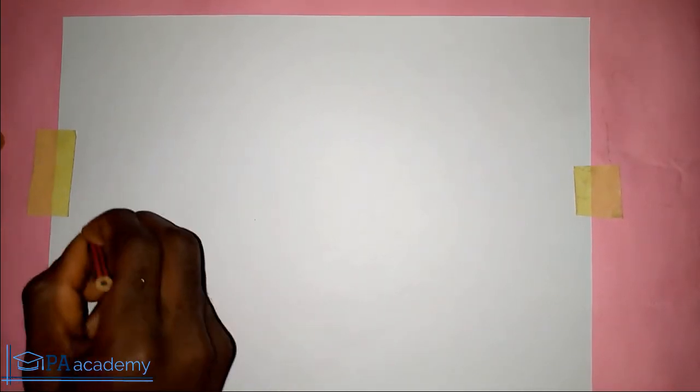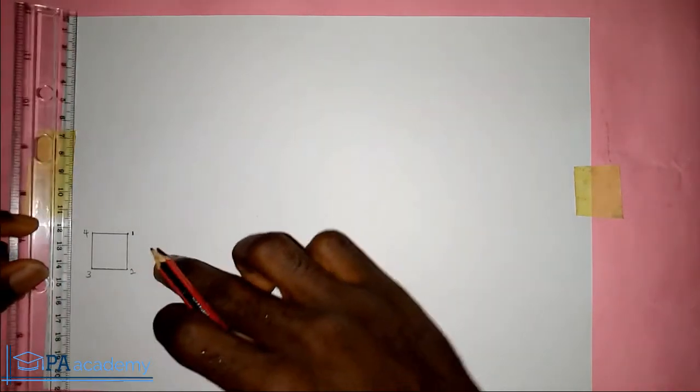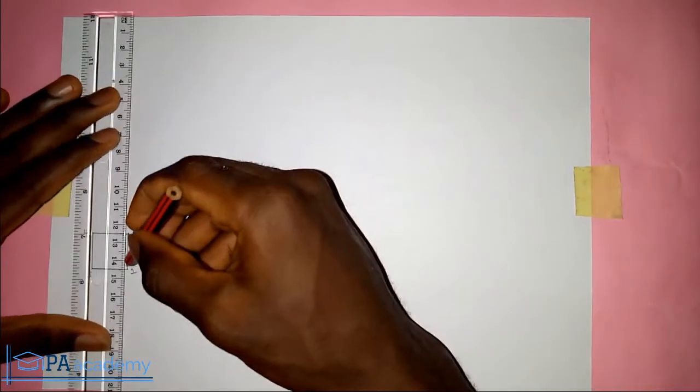So here we already have a square of two centimeters, which is the same as 20 millimeters. Let's call this point 1, 2, 3, and 4. The next thing I want to do is from side 1 and 2, I want to extend it straight up.